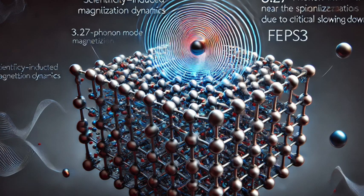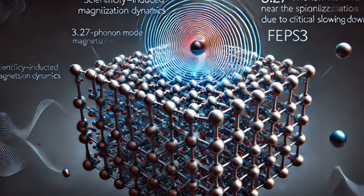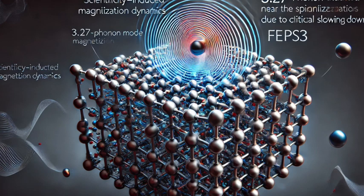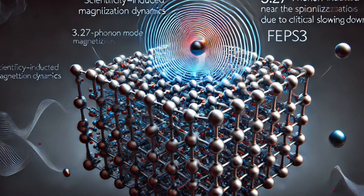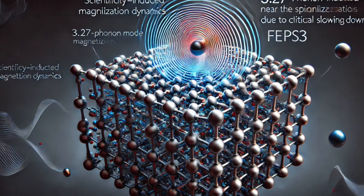Okay, I think I'm getting that. So we have these phonons zipping around in the crystal lattice, carrying energy. But how do they actually influence the electron spins? How do those vibrations make a material magnetic? That's the key question, and that's what makes this discovery so interesting. You see, in certain materials like FEPS3, there's a strong connection, a coupling, between those phonons and the electron spins. It all comes down to the fact that the magnetic interactions between atoms depend on their positions relative to one another. So if the atoms are vibrating, their positions are constantly changing, which means the magnetic interactions between them are changing too.